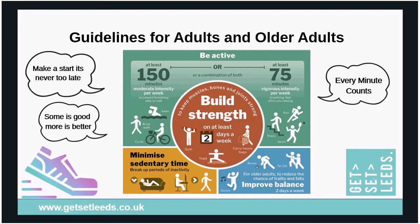Your weekly allowance of 150 minutes or 75 minutes vigorous can be a combination of both intensities — you don't have to do it all at once. A recent update to the guidelines confirmed that every minute counts towards your 150 or 75 minutes. If 150 minutes seems a big goal when starting out, remember: some is good, more is better, and it's never too late to start.